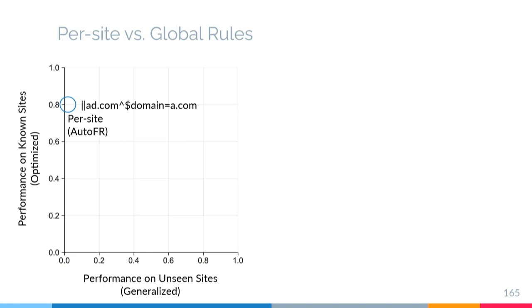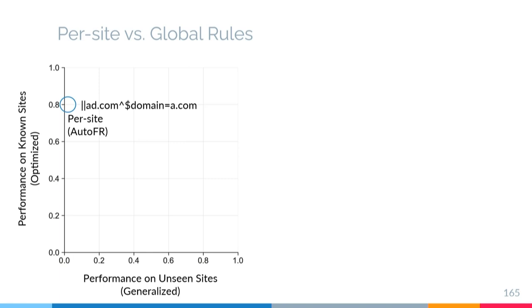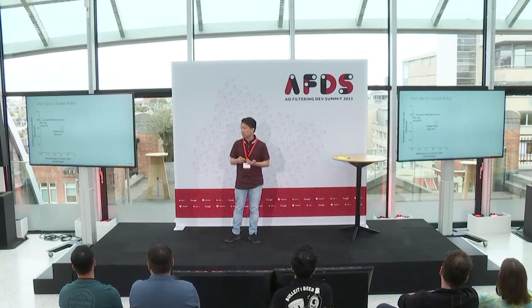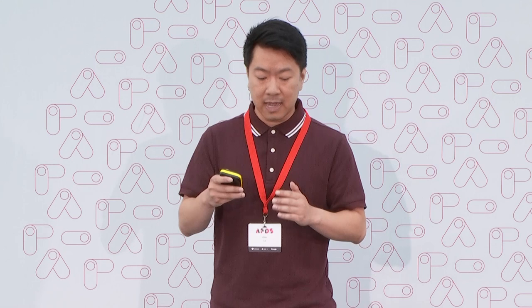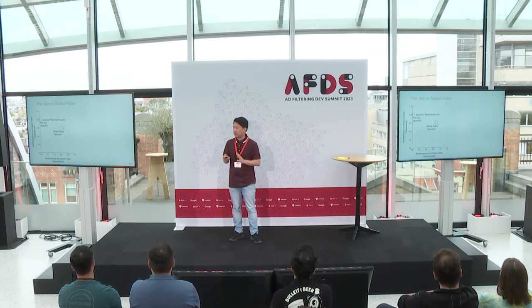There are global rules which can be triggered for any site. However, we expect they won't perform as well as per-site rules because of the potential for collateral damage — a rule may be good for one site but when applied to others may cause unintended breakage. To explore this, we take all per-site rules generated on the top 5,000 sites and apply them naively as global rules on our site snapshots dataset. We find that rules that block multi-purpose domains — domains that can serve both legitimate content and ad-related content — have the highest potential for collateral damage.